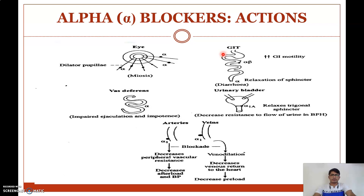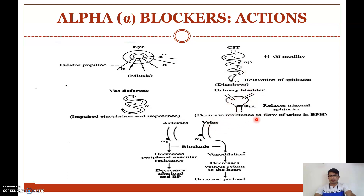The effects produced by alpha receptor stimulation will be blocked. The dilator effect on the eye will be blocked, producing miosis. There will be increased GI motility due to blocking of GI relaxation, relaxation of the trigonal sphincter of the urinary bladder, decreasing resistance to urine flow, decreased peripheral vascular resistance, decreased afterload and blood pressure, venous dilation, decreased venous return to the heart, and decreased preload.